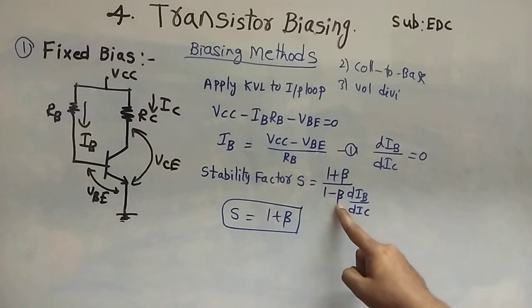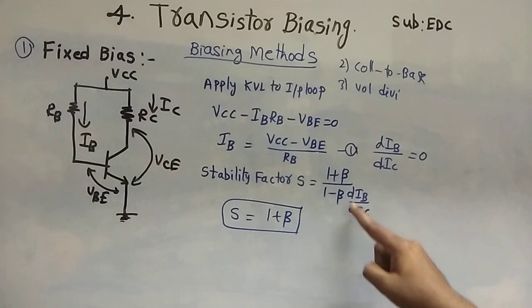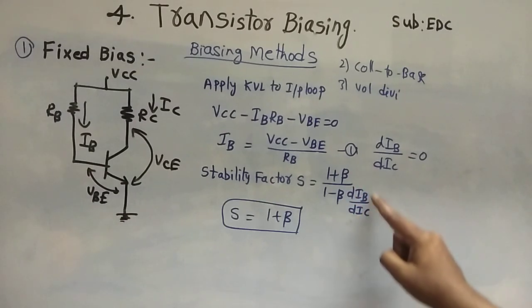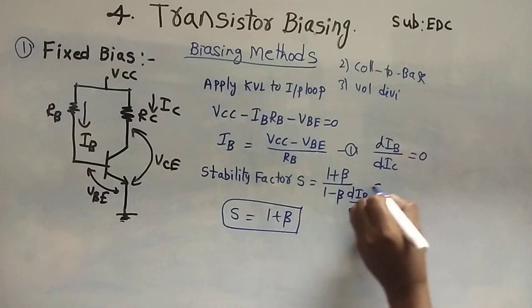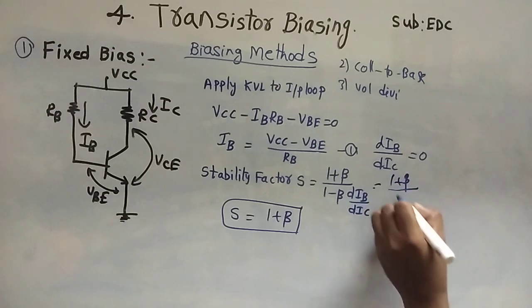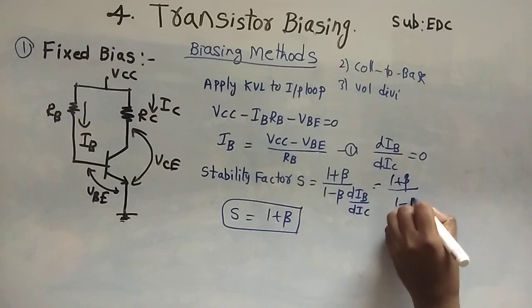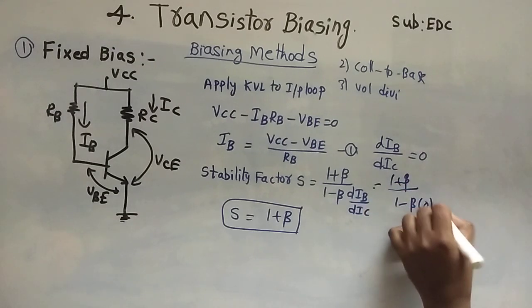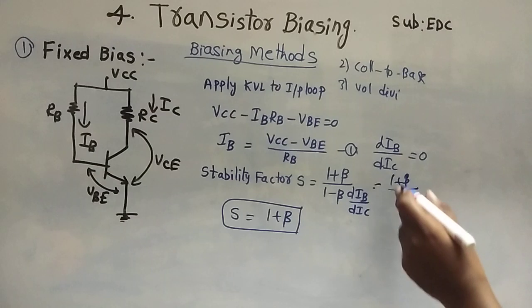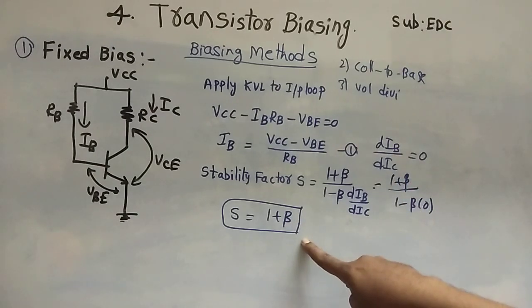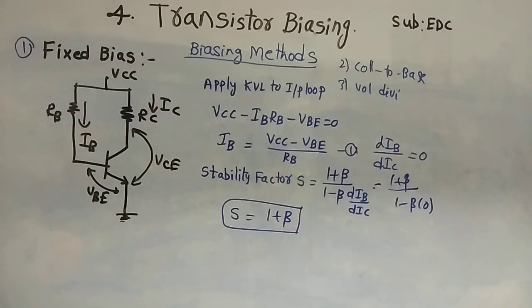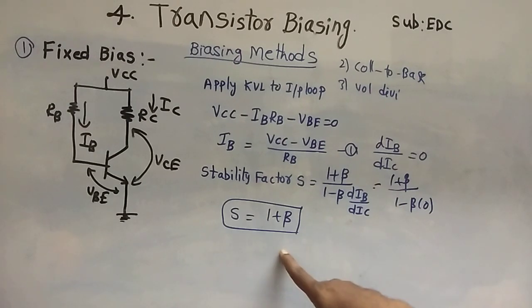Substituting dIB/dIC equals zero into the stability factor equation: S equals (1 plus beta) divided by (1 minus beta times zero), which simplifies to (1 plus beta) divided by 1, which is nothing but 1 plus beta. So the stability factor S for a fixed bias circuit is S equals 1 plus beta.